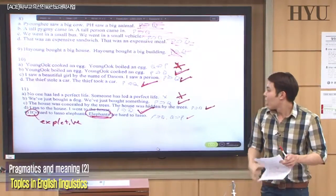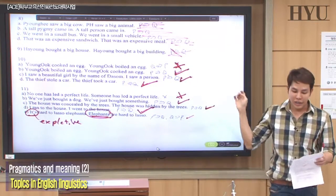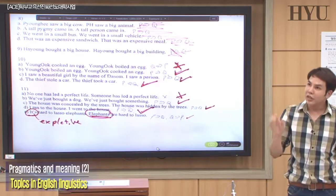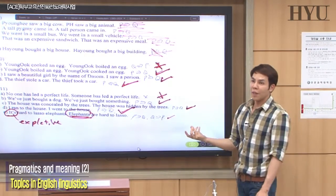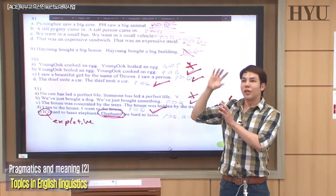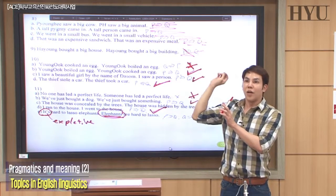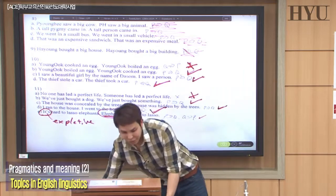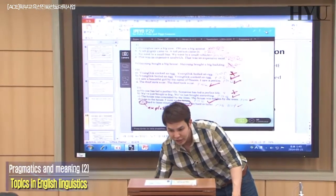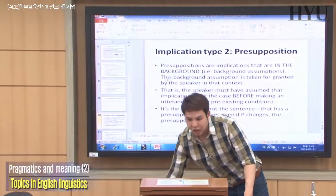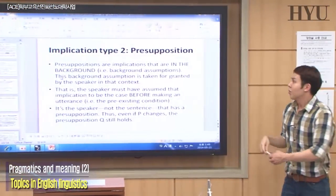That's what we call entailment. Today we'll move on to the second type of meaning. The third type of meaning is the implication we called entailment. Now the second type of meaning is called presupposition.